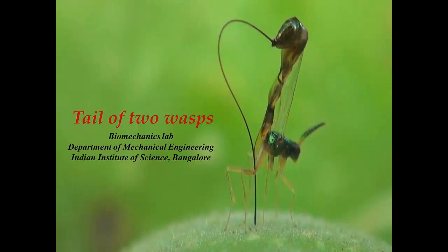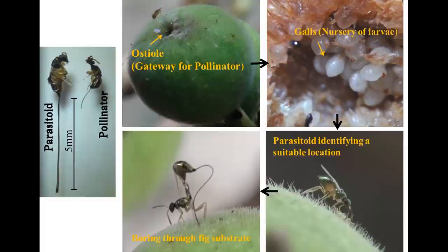In our study, we looked at functional adaptations and mechanical properties of fig wasp ovipositors. A pollinator enters through the ostiole and lays its eggs while pollinating, whereas a parasitoid accesses the inside using its long, thin, and flexible ovipositor.